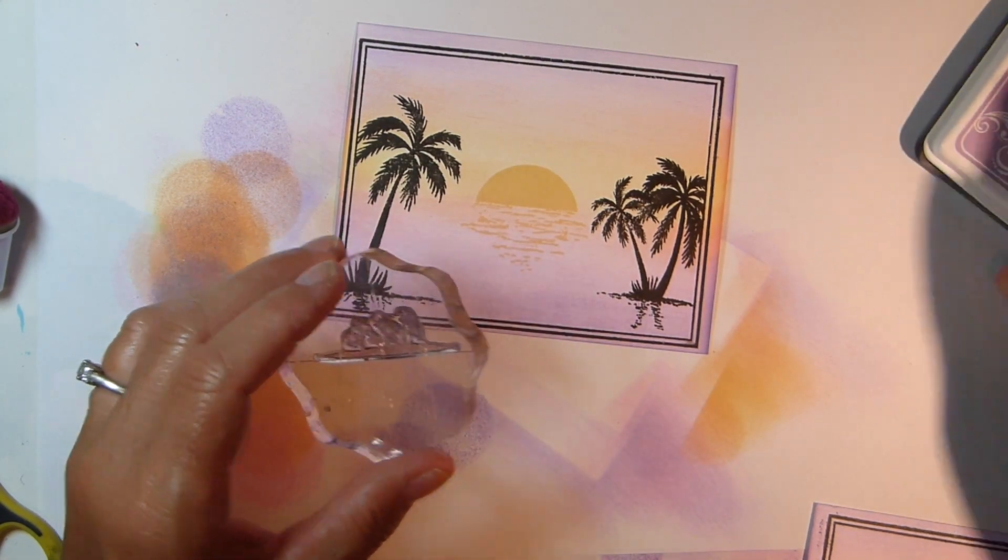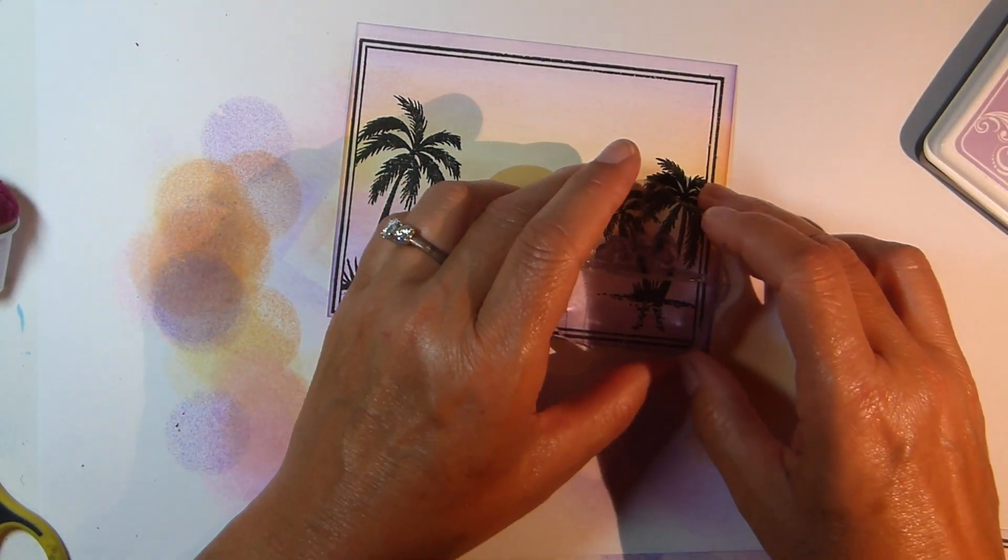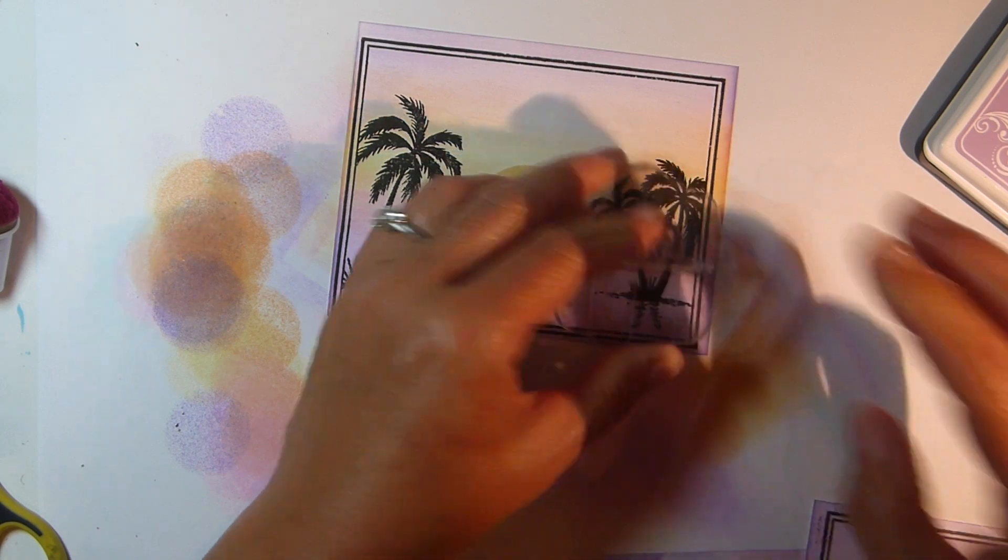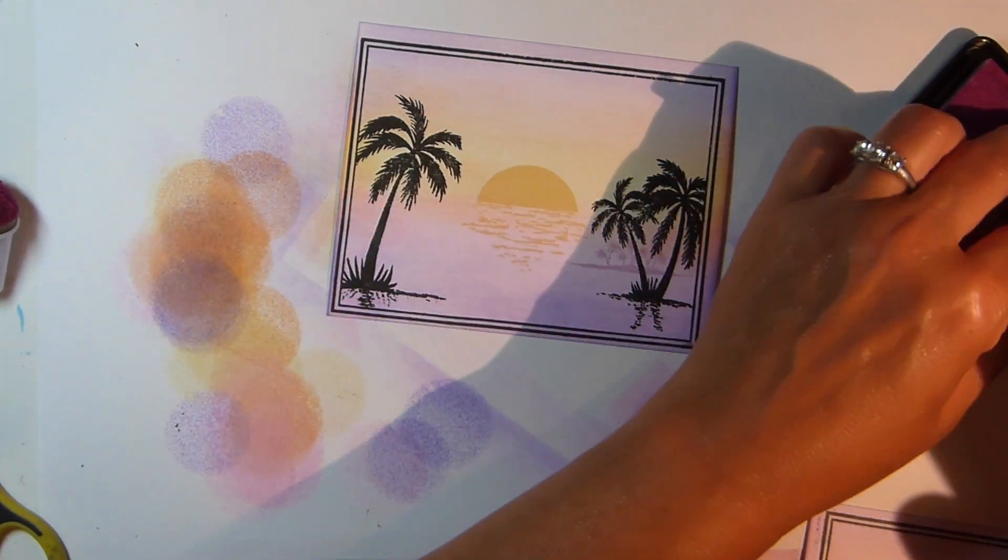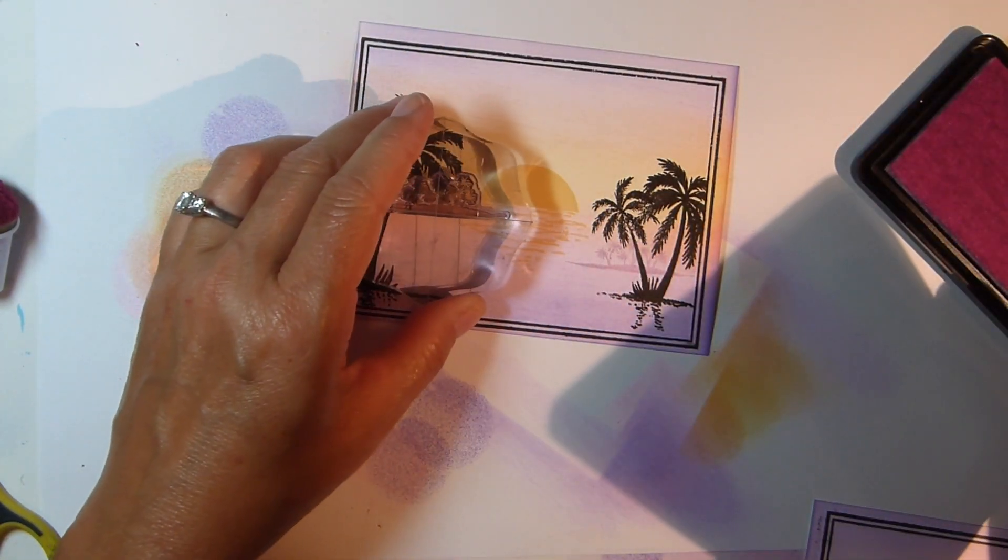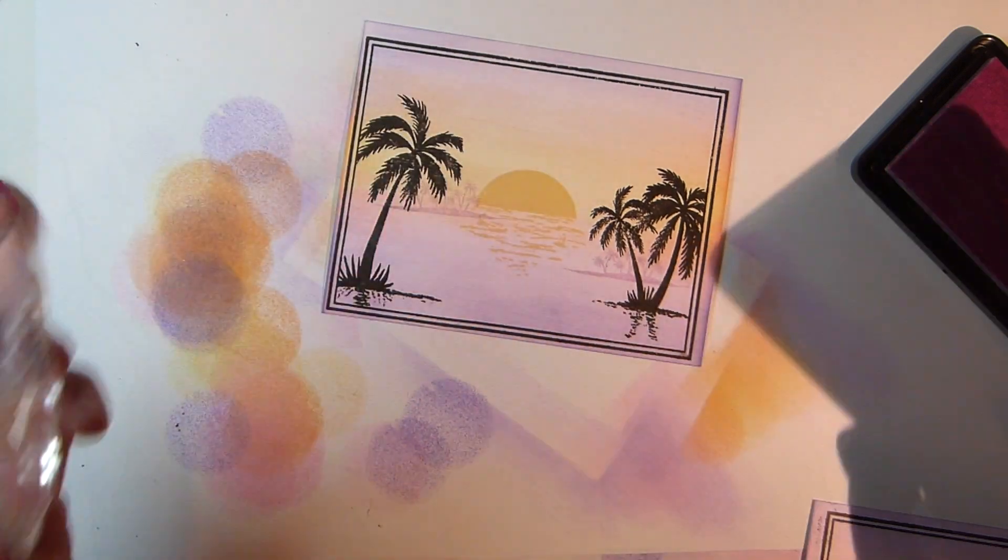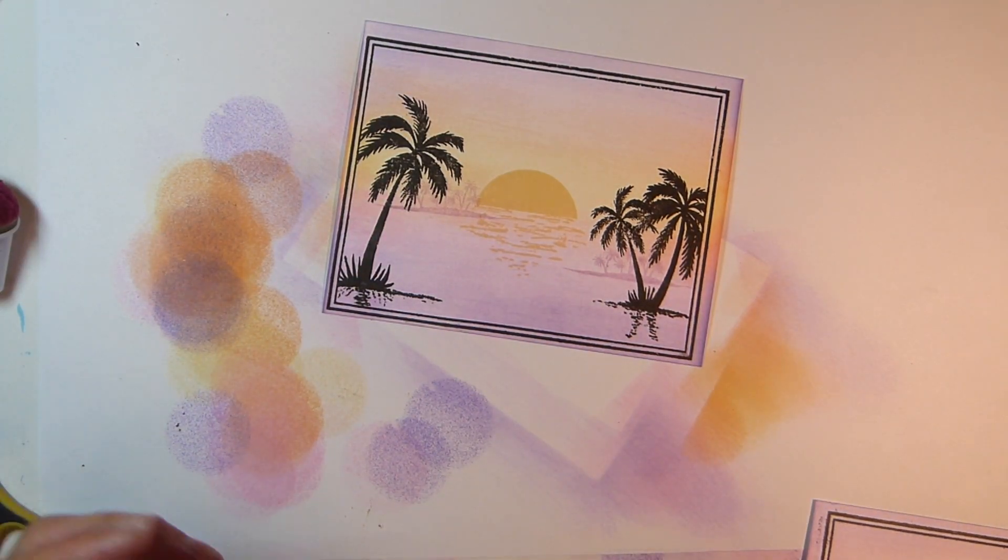Now stamp the small island image using Gina K Lovely Lavender ink, and I'm stamping it a couple of times just to make it look like there are a few islands in the background. That one on the right side I stamped a little lower than I would have liked. I wish I'd made that a little higher to make it look a little more distant.